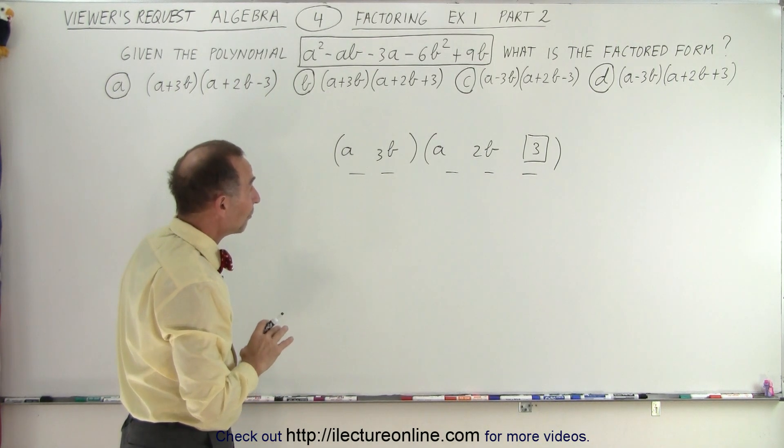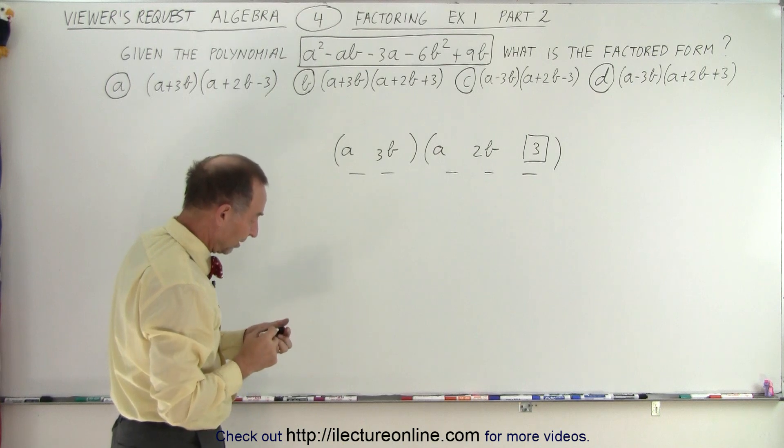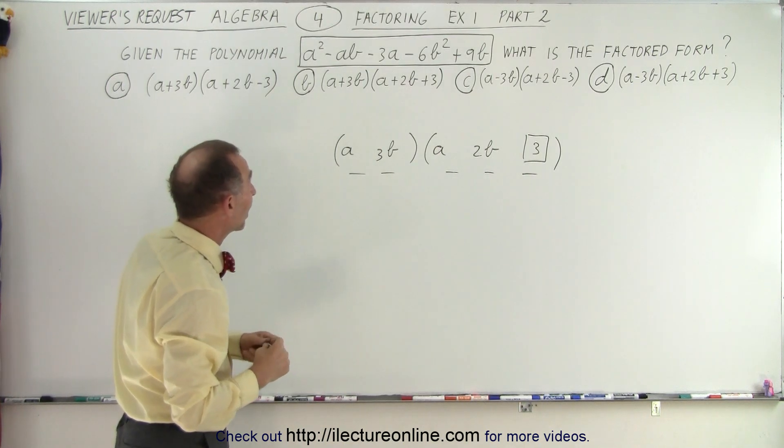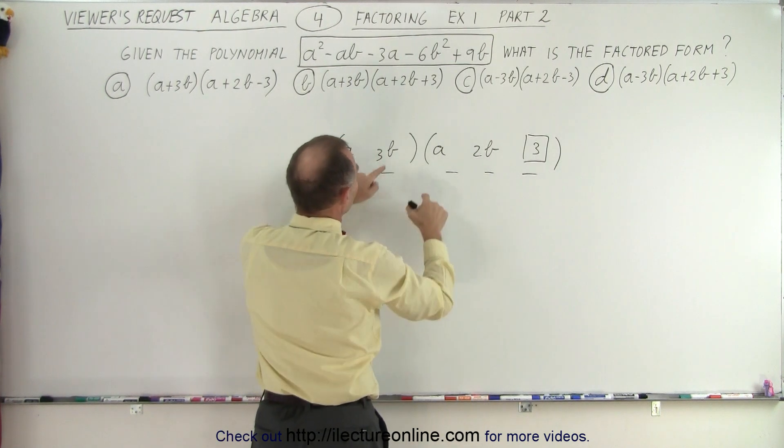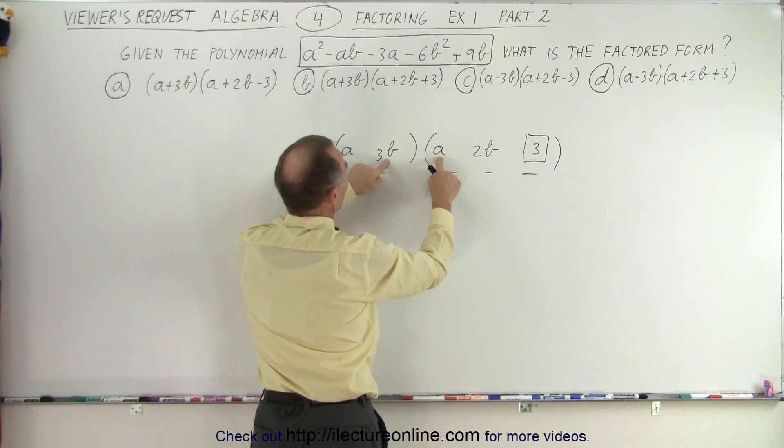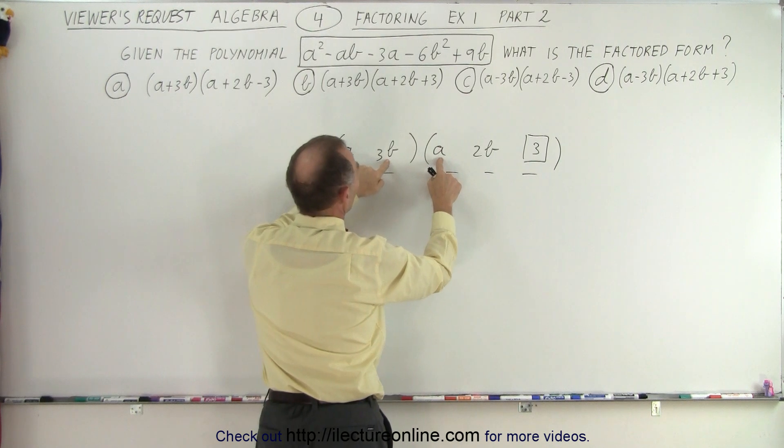Now we probably have all the correct coefficients. Let's check. There's one more coefficient we haven't checked yet, which is the a b over there. So if I multiply this times this, I get a three a b. If I multiply this times this, I get a two a b. But I get a negative a b.